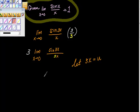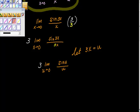So then look what we have. We end up with 3 times the limit as u goes to 0 of sine u over u. And we know that sine x over x is 1. And this is the same thing, it's just a different variable.